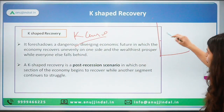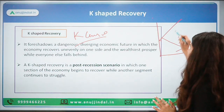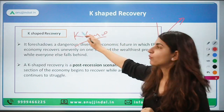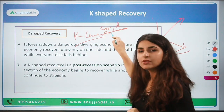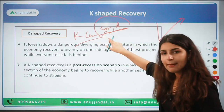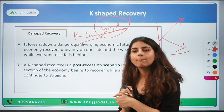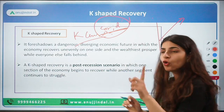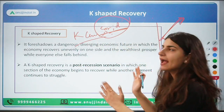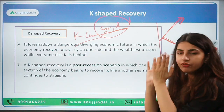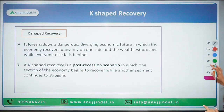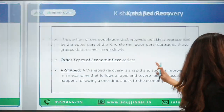K-shaped growth represents that one sector of the economy is growing whereas another sector is not growing — there is a divergence between the two. This concept was first brought out after COVID. After any recession, it is observed that one sector may be growing while the other is contracting. K-shaped recovery is a post-recession scenario in which one section of the economy begins to recover while another segment continues to struggle.